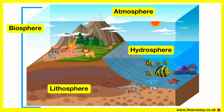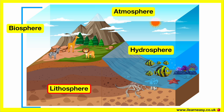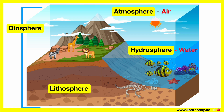There are four spheres of the Earth. The four spheres of Earth are the atmosphere, hydrosphere, lithosphere and biosphere. These are the four subsystems into which the Earth can be split. These include the air, water, land and all living things.